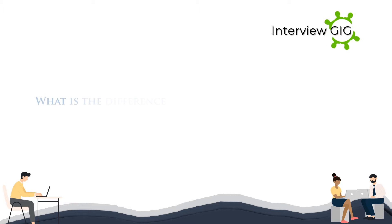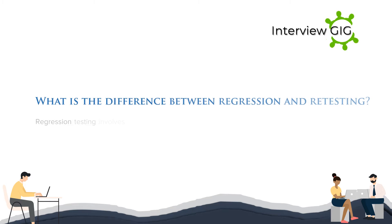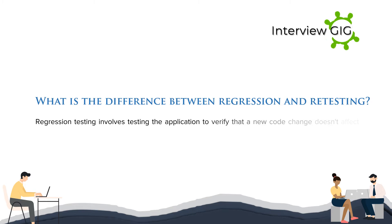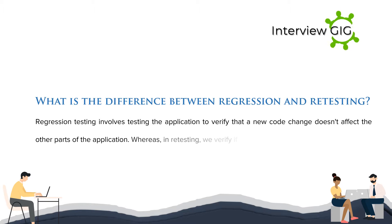What is the difference between regression and retesting? Regression testing involves testing the application to verify that a new code change doesn't affect the other parts of the application, whereas in retesting we verify if the fixed issue is resolved or not.